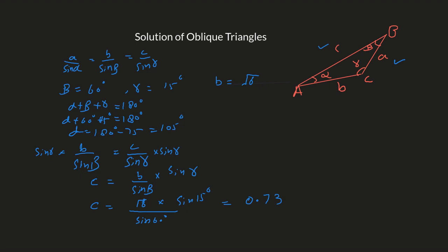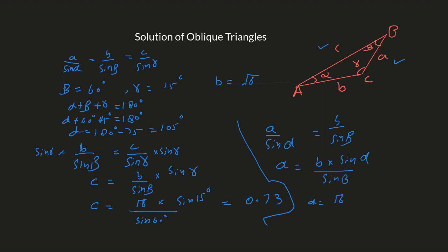Now we have to figure out the value of a. We already have c and b is given. Again we will choose the law of sines: a over sine alpha equals b over sine beta. So a equals b times sine alpha over sine beta. Plugging in the values: b is the square root of 6, times sine of 105 degrees, over sine of 60 degrees. Use your calculator and you will find a equals 2.73.